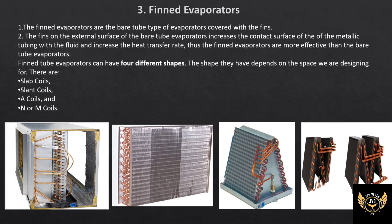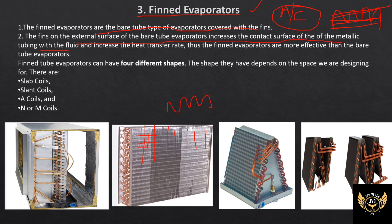Next one is finned evaporators. This is another type of evaporator — nothing but a coil. When we add fins to the coil, we have finned evaporators. The fins are used so that more amount of air is connected to the copper coil, increasing the surface area. More air is connected to the liquid and vapor refrigerant, so more cooling is achieved. We can use fin type equipment.